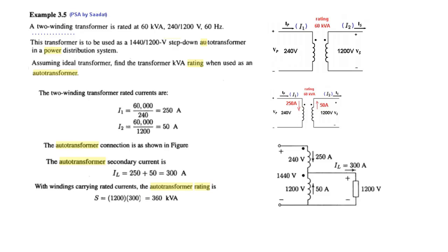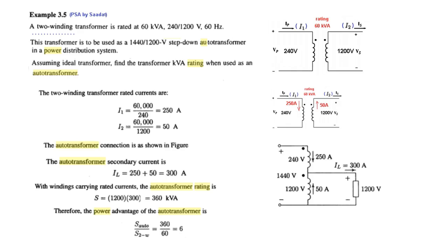The auto transformer KVA rating is S_auto = VH × IH = 1200 × 300 = 360 kVA. The two-winding transformer was rated at 60 kVA, but in auto transformer mode it handles 360 kVA. The power advantage is S_auto / S_2winding = 360 / 60 = 6 times. This means the transformer can now handle 6 times more power — a great advantage of the auto transformer configuration.